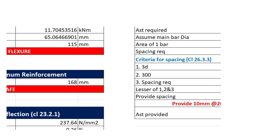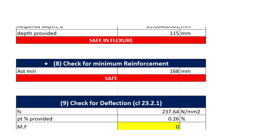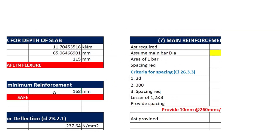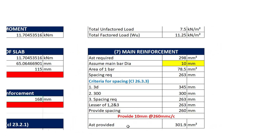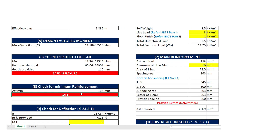Moving to the eighth step, in which we need to check for the minimum reinforcement. The AST minimum will be 160 mm square, which is lesser than the AST provided. Hence the slab will be safe for the provided reinforcement.